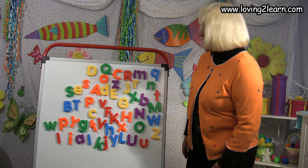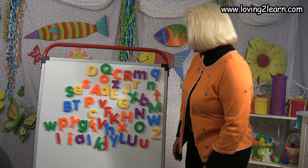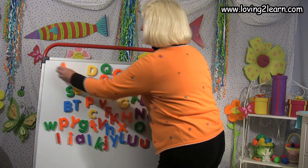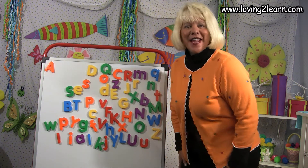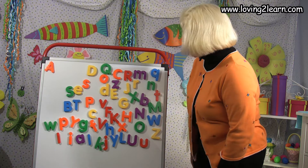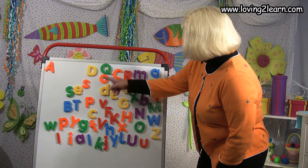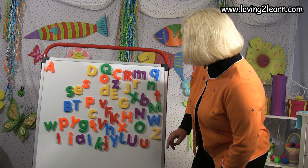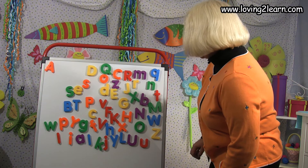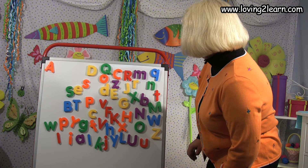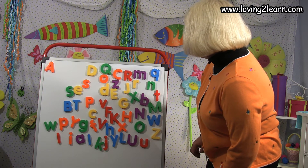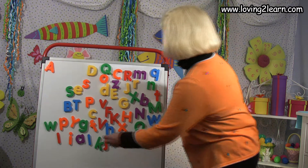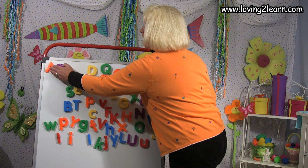We'll find the capital A first. Help me look. Do you see it? We're going to put the capital A over here and then we have to find the small a. Do you look for it? Look for it. Where is it? The small a — I'm having a hard time finding it. There it is. There's the small a.